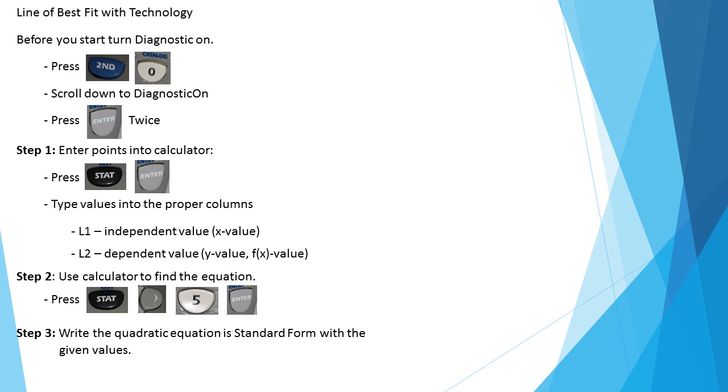After that, you're going to write the quadratic equation in standard form with the values it gives you. You're going to use ax squared plus bx plus c - that's standard form. Fill in what it tells you for a, for b, and for c. Round values as you see fit - usually at least one or two decimal places. Then use your equation that you just generated to plug in the value they give you to get a prediction.